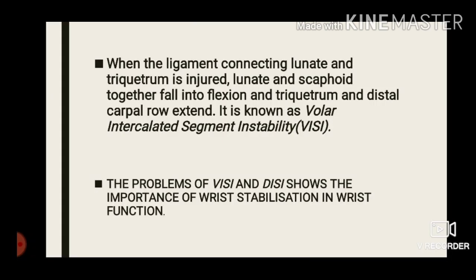When the lunotriquetral ligament is injured, the lunate and scaphoid move into flexion — moving forwards — while the triquetrum and distal carpal row move backwards. This is known as Volar Intercalated Segment Instability, or VISI. The problems of VISI and DISI demonstrate the importance of wrist ligaments for wrist stabilization and function. In the next video we will discuss the dorsal and volar musculature of the wrist complex.